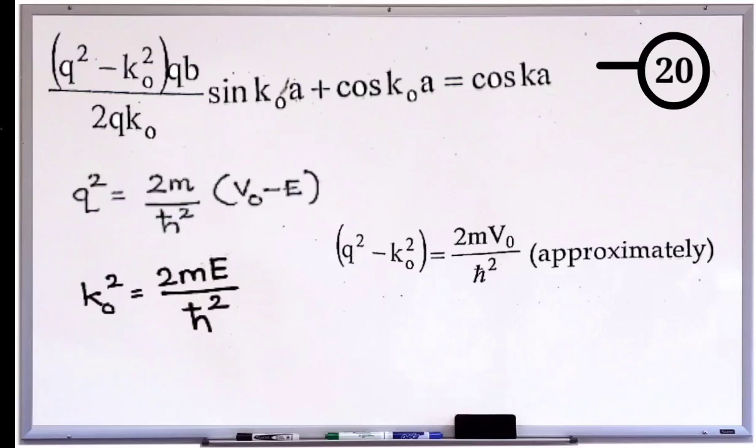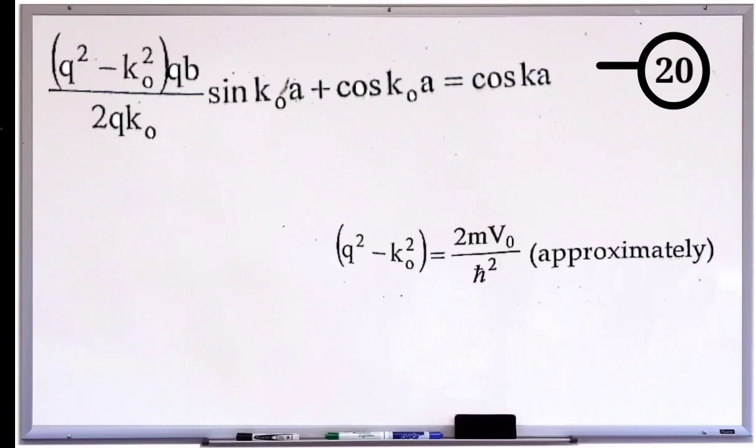Why there is no energy terms, E terms? Because energy of the particle, that is E, is less than the potential barrier V₀.